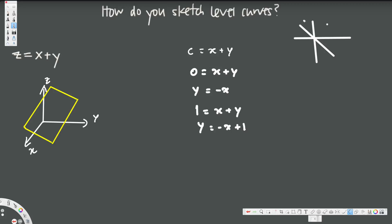Let's see what happens if c = 2. We have 2 = x + y, therefore y = -x + 2. This is going to be shifted another one unit upward, and the graph will be parallel.